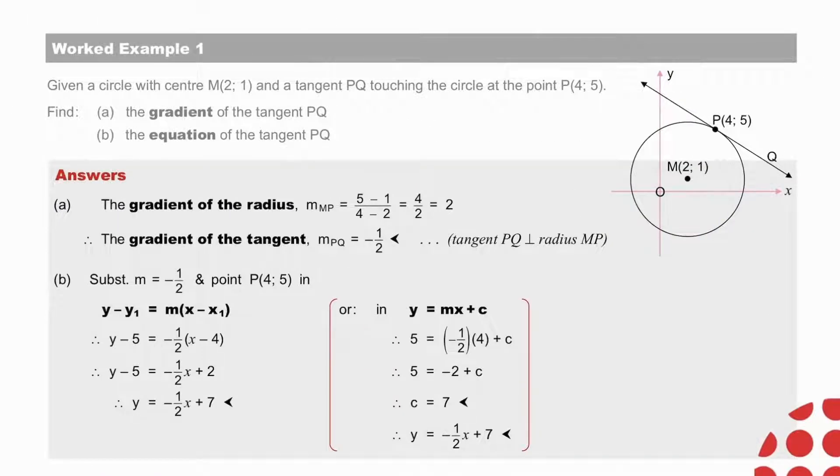Pause to check your answers. The radius is perpendicular to the tangent. The gradient of the radius is equal to 2, and so the gradient of the tangent is minus a half. To find the equation of the tangent, we use the gradient of minus a half and point P on the line to find the equation using either that form or that form and we arrive at our answer.